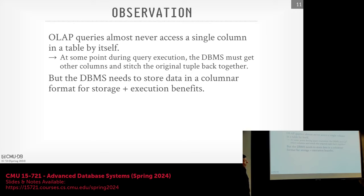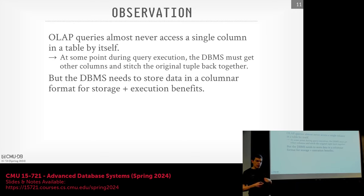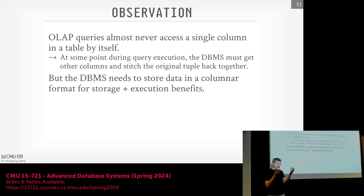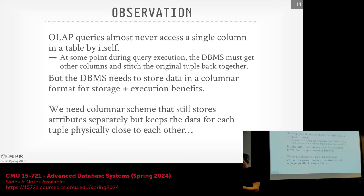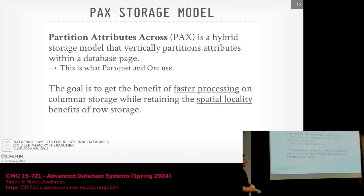Most OLAP queries are never going to access a single column in a table by itself. Single-column queries without a where clause, group by, or sorting aren't that common — multi-column queries are much more typical. So if we do DSM with single files per column, I'm going to have to jump through different files when putting things back together to process my query — a where clause referencing four columns means jumping to four files at different offsets. We want all the benefits of columnar data — better compression, vectorized execution — but without the downsides of having separate files. This is what PAX is going to solve.